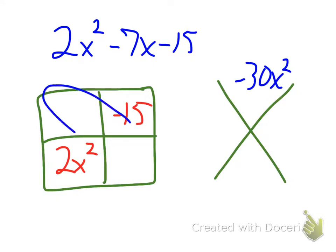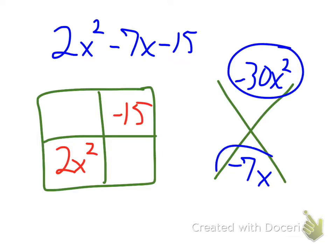But I also know that these add to be that. So the bottom of my diamond problem is negative 7x. So now I'm looking for the two things that multiply to this, but add to this.